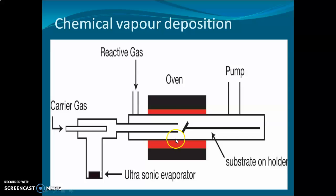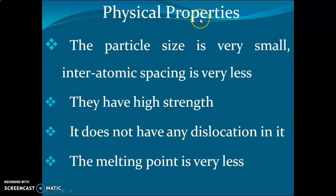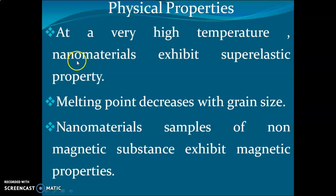Nanomaterials have distinct physical properties. The particle size is very small, so the total atomic spacing is very low, resulting in high strength. When the grain size of a material is reduced, its stability and strength increase, and dislocations are minimized. The melting point is also lower — as grain size is reduced, the metal melts at a lower temperature. At high temperatures, nanomaterials exhibit superelastic properties. As grain size increases, the melting point decreases.